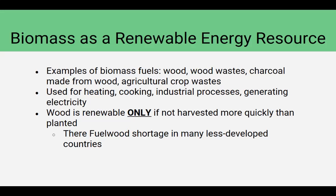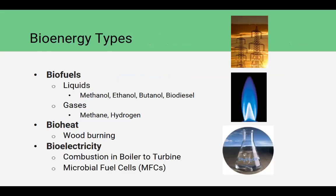So what are the types of bioenergy? The first is biofuels — most of these are liquids: methanol, ethanol, butanol, biodiesel. But this also includes gases like methane and hydrogen. We can get bioheat by burning wood — you may have a wood pellet fireplace or a regular fireplace. And then the last one is bioelectricity, which uses combustion in a boiler to turn a turbine to make electricity, or developing a microbial fuel cell to produce electric potential.